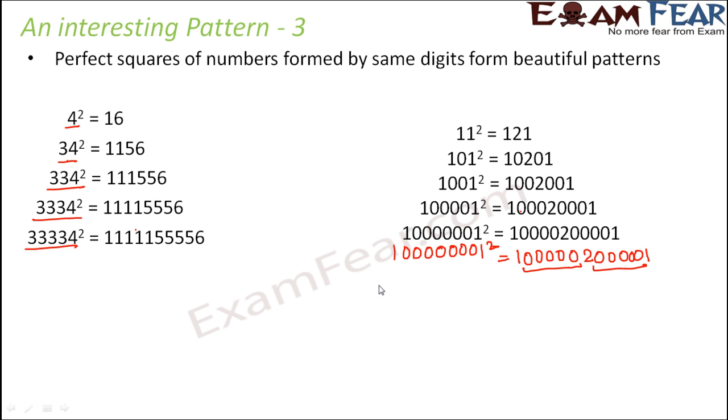Just by looking at the pattern, you can tell squares of even bigger numbers. In this case also, if I increase one more three, the number of ones earlier was five, so I increase by one again. Earlier there were four fives, so I increase five by one more and six. Without doing actual multiplication, you can predict squares of bigger numbers.